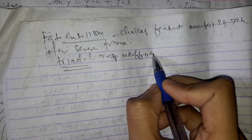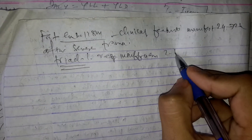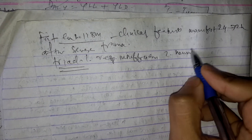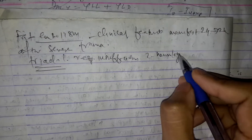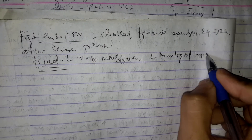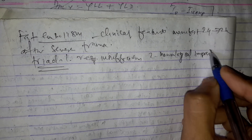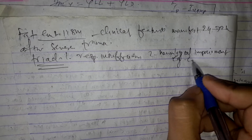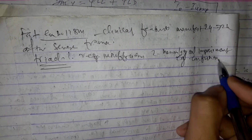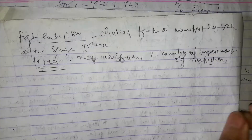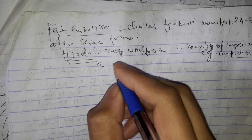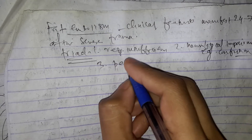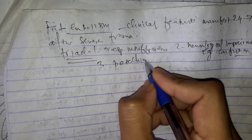The second is neurological impairment, which will manifest as confusion. The third is a petechial rash.